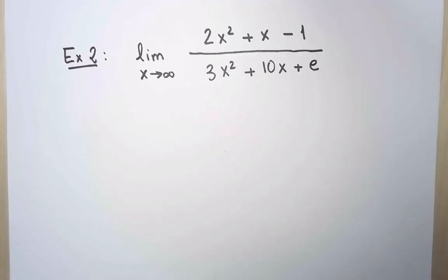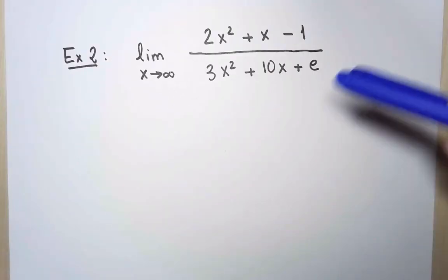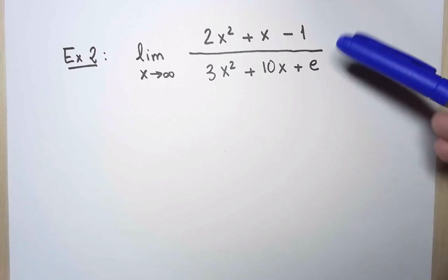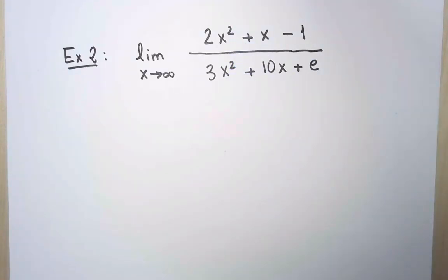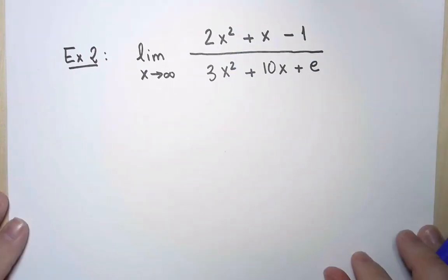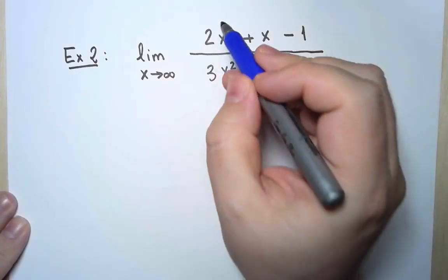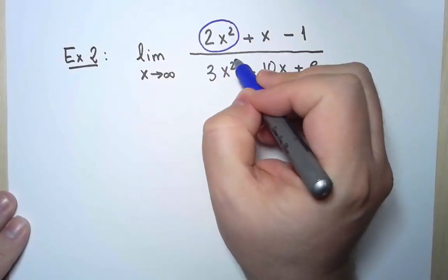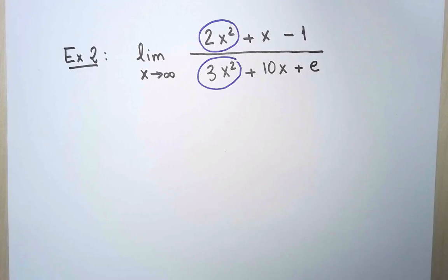We can use the same idea to compute the limit as x approaches infinity of a quotient of polynomials, a rational function. And here is an example. Like before, I'm going to say that at the top and at the bottom, the only term that matters is the one with the biggest power. Why?